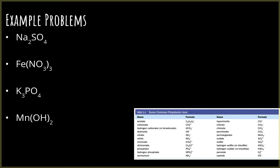So here's how this works. You're going to reference your chart to know the names of the polyatomic ions. If it's an element that's a single charge metal, you just use the name of the element for the beginning. If it's a multiple charge metal, then you still have to include the Roman numeral. So this first example would be sodium, and this polyatomic ion from our list is called sulfate — so this first one would be called sodium sulfate.